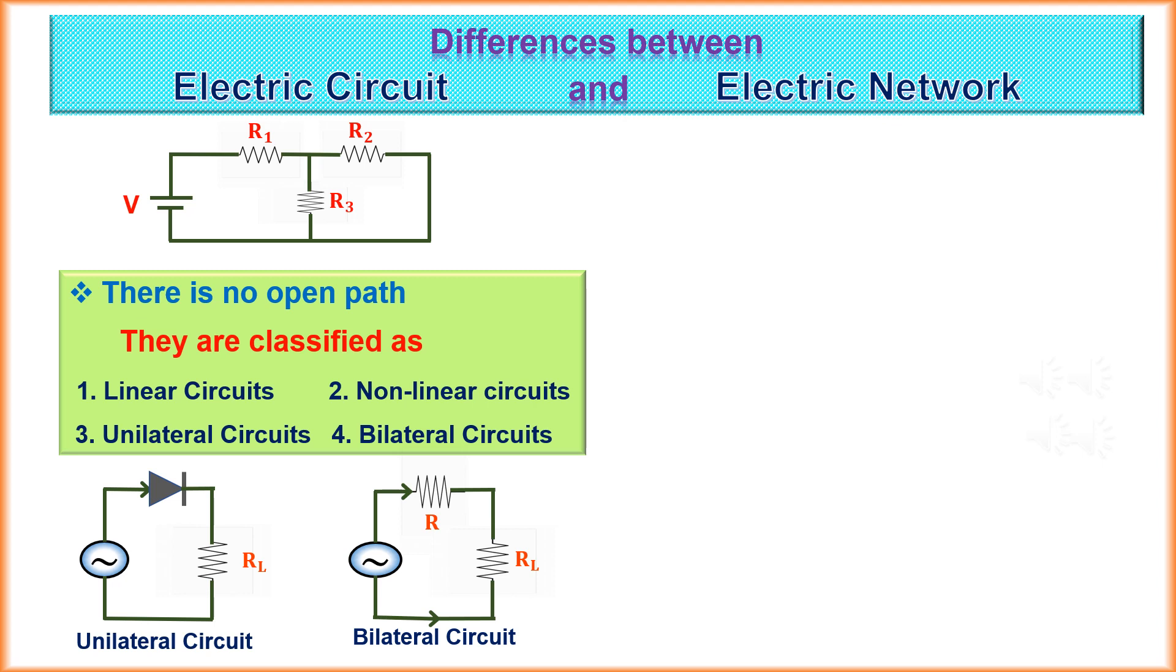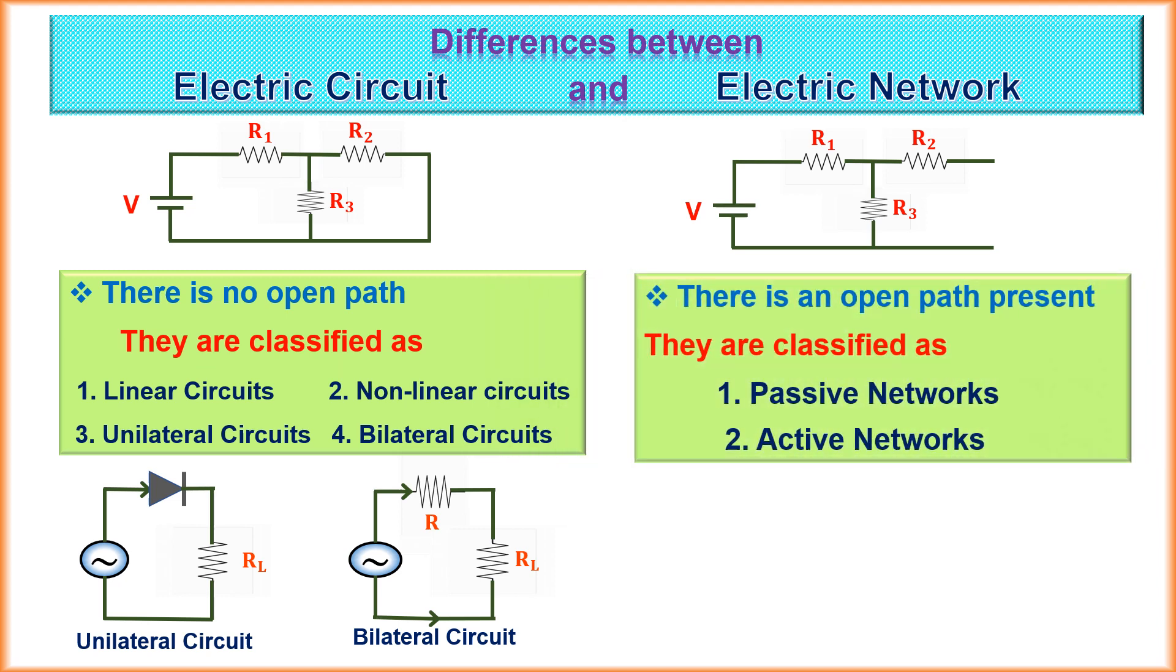A combination of various electric elements connected in any manner whatsoever is called an electric network. There is a chance of the presence of an open path in the electric network and hence current may not flow through all parts of the network. They are classified as passive networks and active networks. A passive network is one which contains no source of EMF in it. An active network is one which contains one or more than one source of EMF.